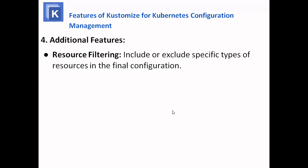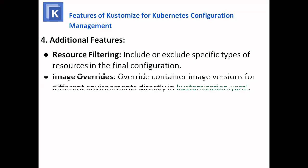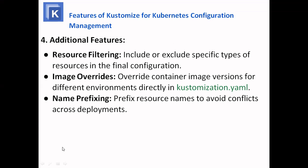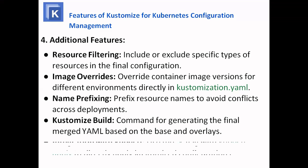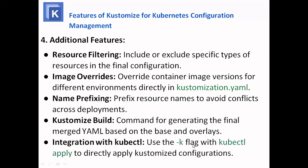Additional features include: resource filtering — include or exclude specific types of resources in the final configuration using kustomization.yml. Image overrides — override container image versions for different environments directly in kustomization.yml. Name prefixing — prefix resource names to avoid conflicts across deployments, specifying the prefix for development, production, or staging. The kustomize build command generates the final merged YAML based on the base and overlay. Integration with kubectl: use the -k flag with kubectl apply to directly apply the Kustomize configuration.